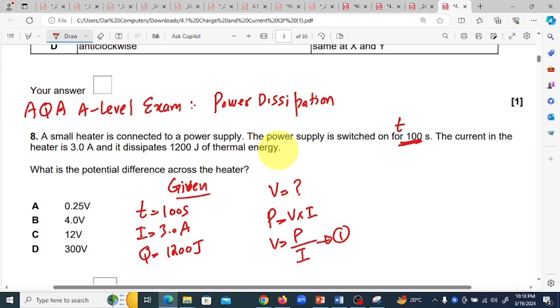P equals... As we know, the basic definition of power is the rate of doing work or rate of supplying energy. Here, the thermal energy that is dissipated, so the thermal energy Q per unit time t is the rate of thermal energy dissipation. This is the power.